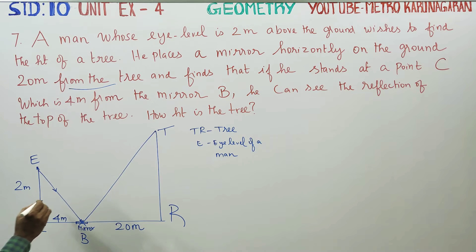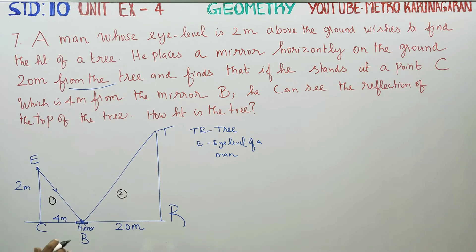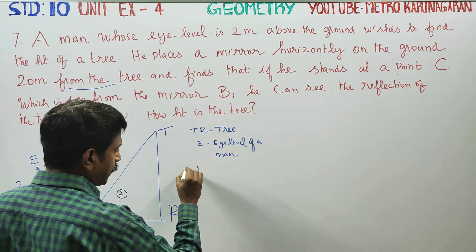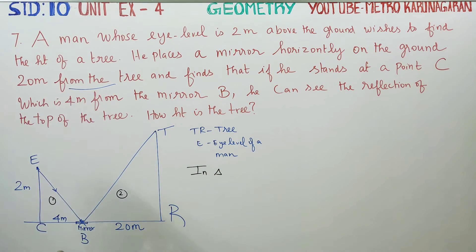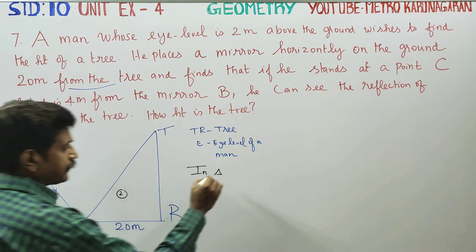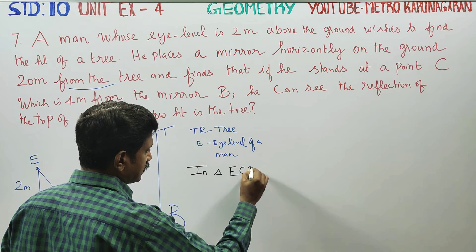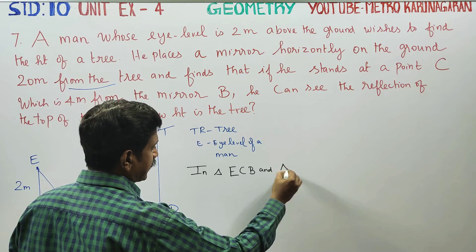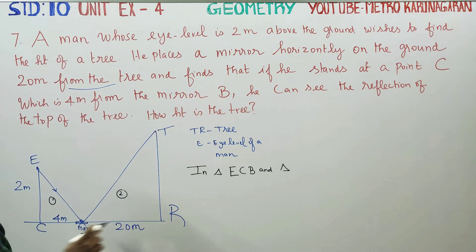This is Triangle 1 and this is Triangle 2. In triangle ECB and triangle TRB, we will identify the two triangles for our solution.